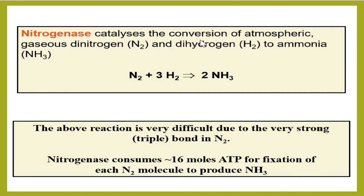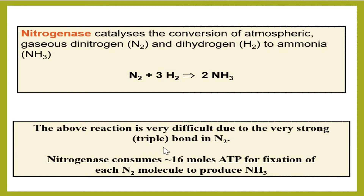Nitrogenase enzyme converts atmospheric nitrogen to ammonia when it reacts with atmospheric hydrogen. Nitrogen is a very stable compound because it has a triple bond, making it chemically inactive. The nitrogenase enzyme consumes 16 moles of ATP and converts one molecule of nitrogen into two molecules of ammonia — this is an energy-consuming process.